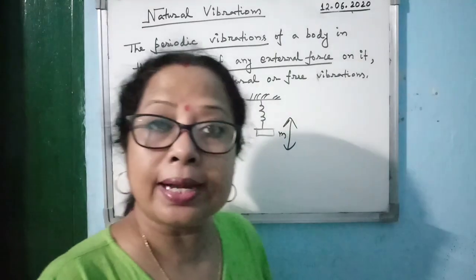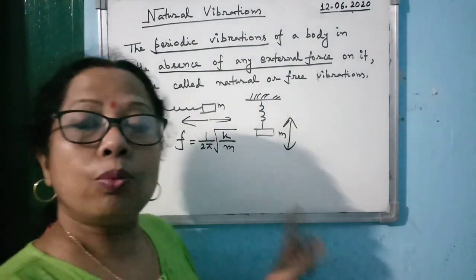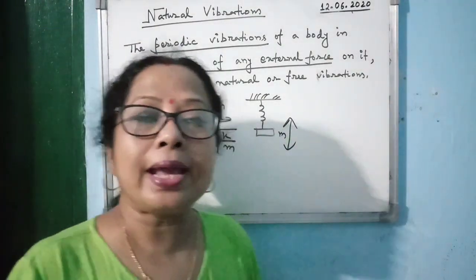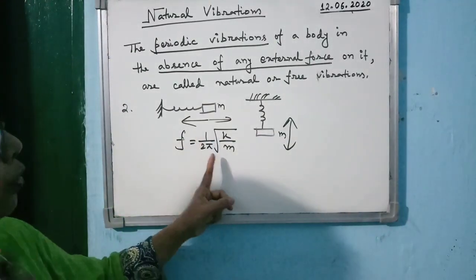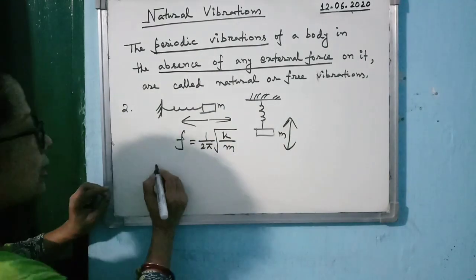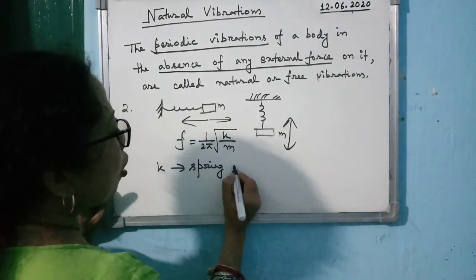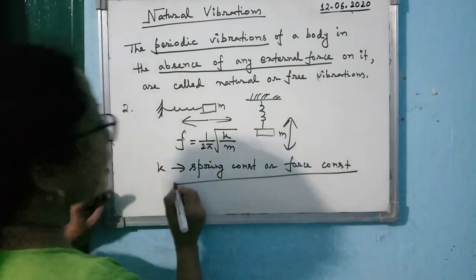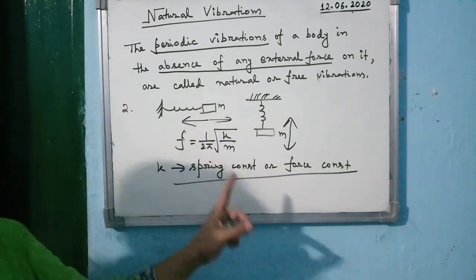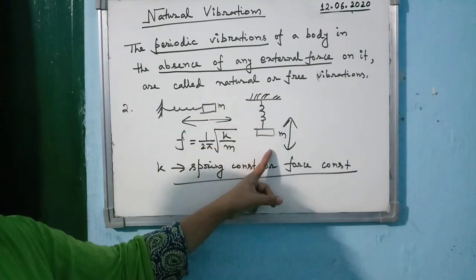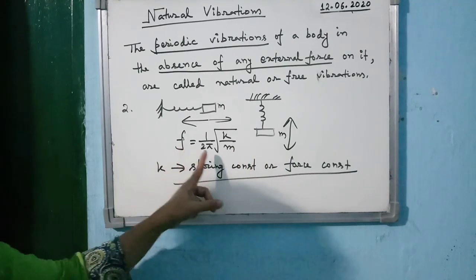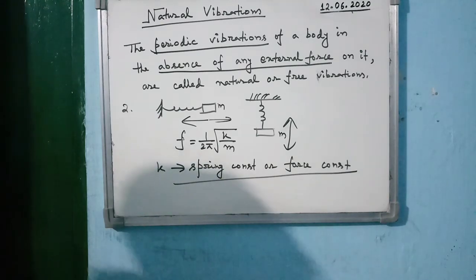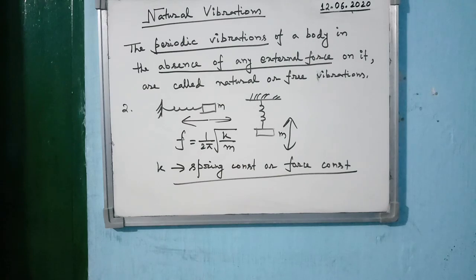For each example, you must remember the frequency of vibration. For a simple pendulum it was 1/(2π) × √(g/L). For the spring-mass system, frequency is 1/(2π) × √(K/M). Here K is known as the spring constant or force constant, and it depends on the nature of the spring. Frequency depends on the mass of the body.